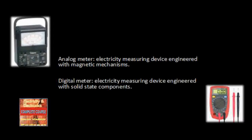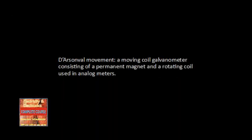Think of an electrical meter as an electronic ruler used to measure electrical quantities such as voltage, current, and resistance. The meters you will be using come in two formats: analog meters and digital meters. Analog meters use a scale with continuous variable values, while digital meters give values in discrete amounts using the units 0 through 9. Digital meters are discussed later in the chapter.